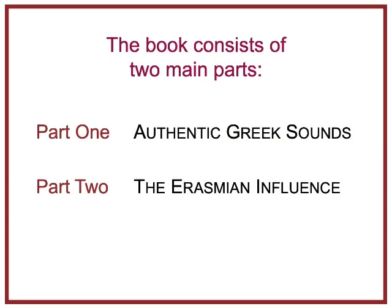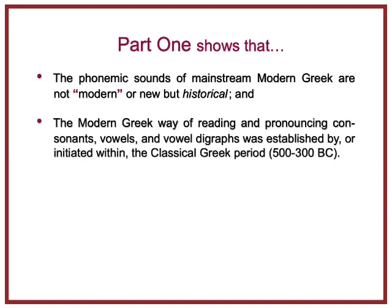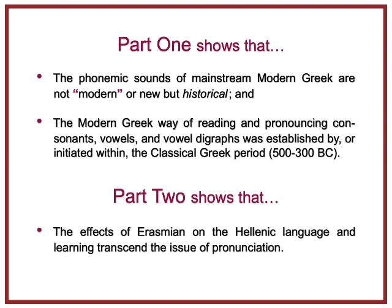The book consists of two main parts: authentic Greek sounds and the Erasmian influence. Part one shows that the phonemic sounds of mainstream modern Greek are not modern or new, but historical. The modern Greek way of reading and pronouncing consonants, vowels, and vowel digraphs was established by or initiated within the classical Greek period. Part two shows that the effects of Erasmian on the Hellenic language and learning transcend—go far beyond—the issue of pronunciation alone.